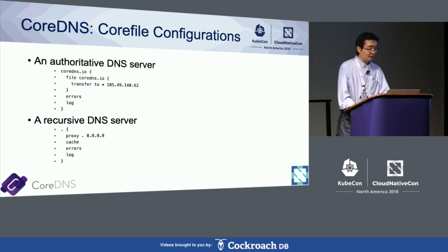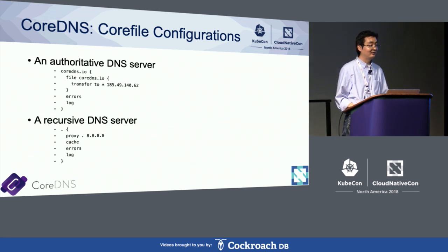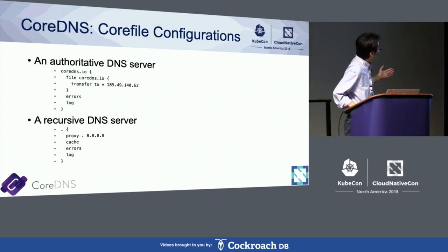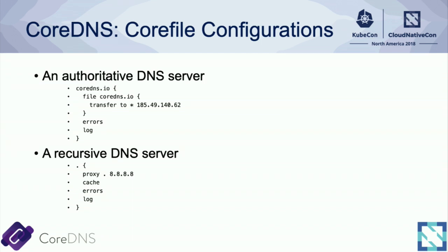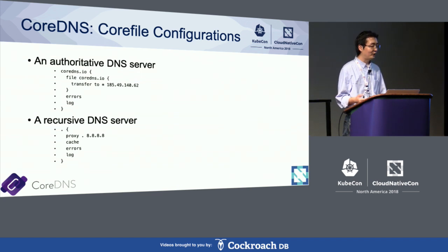One of CoreDNS's features is that it uses a core file for configuration. The core file is actually pretty similar to a Caddy file, which reminds you of the association between CoreDNS and Caddy HTTP. The first example gives you an authoritative DNS server. The second example gives you a recursive DNS server — you can see we're using proxy pointing to Google's 8.8.8.8, or you can use Cloudflare's privacy-preserving DNS server at 1.1.1.1.